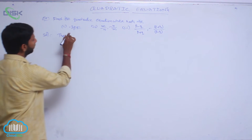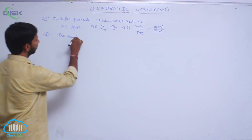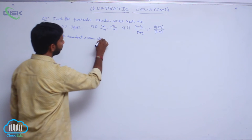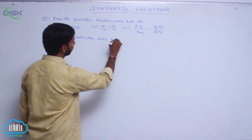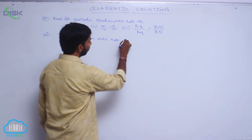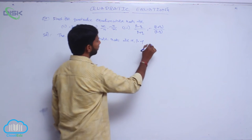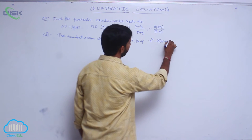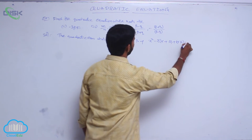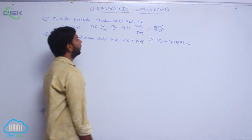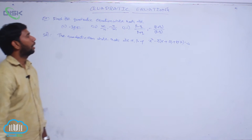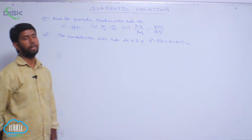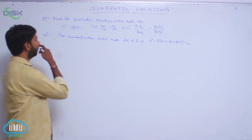The quadratic equation whose roots are alpha and beta is: x squared minus x(alpha plus beta) plus alpha·beta equals 0.